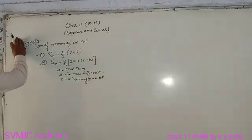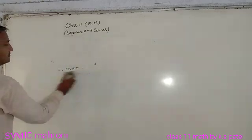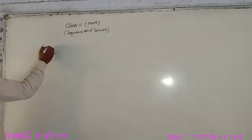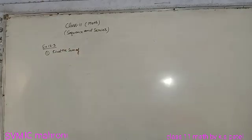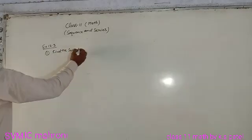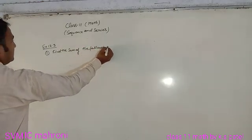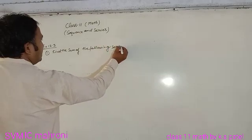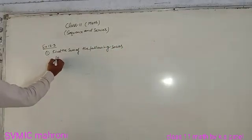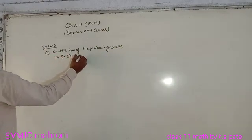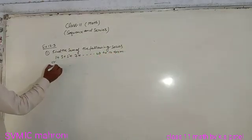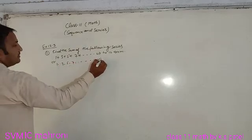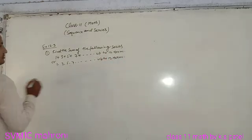Exercise 0.3, question number first. Find the sum of the following series: 1+3+5+7+... up to 12 terms.